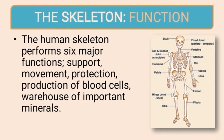The human skeleton performs six major functions: support, movement, protection, production of blood cells, and serving as a warehouse of important minerals. So it not only protects and supports our internal organs and gives them shape — it also produces blood cells and stores different minerals. You can understand how important our skeletal system is.